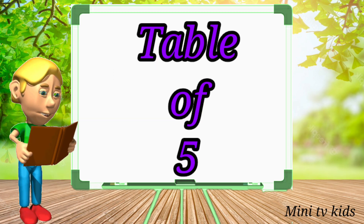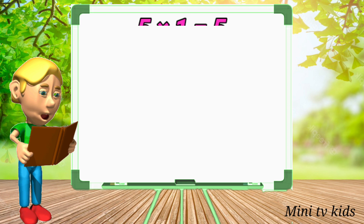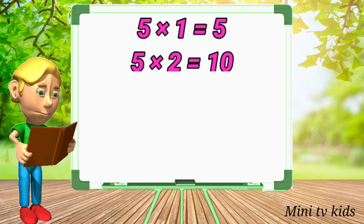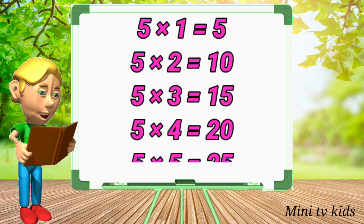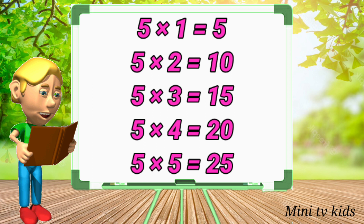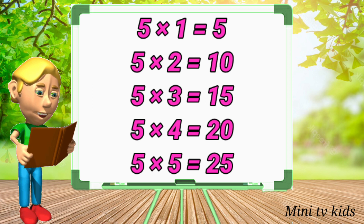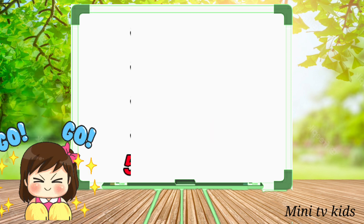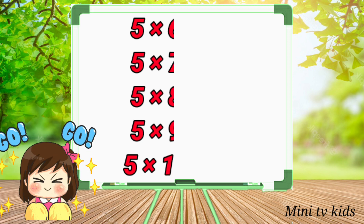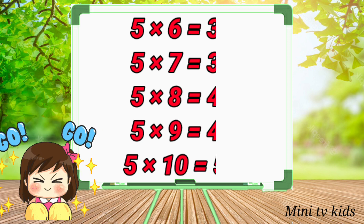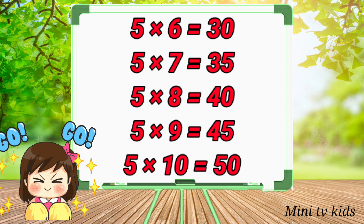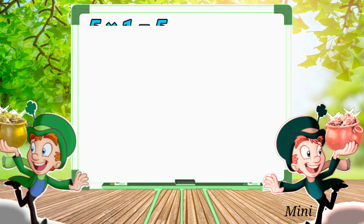Table of 5. 5 1's are 5, 5 2's are 10, 5 3's are 15, 5 4's are 20, 5 5's are 25, 5 6's are 30.